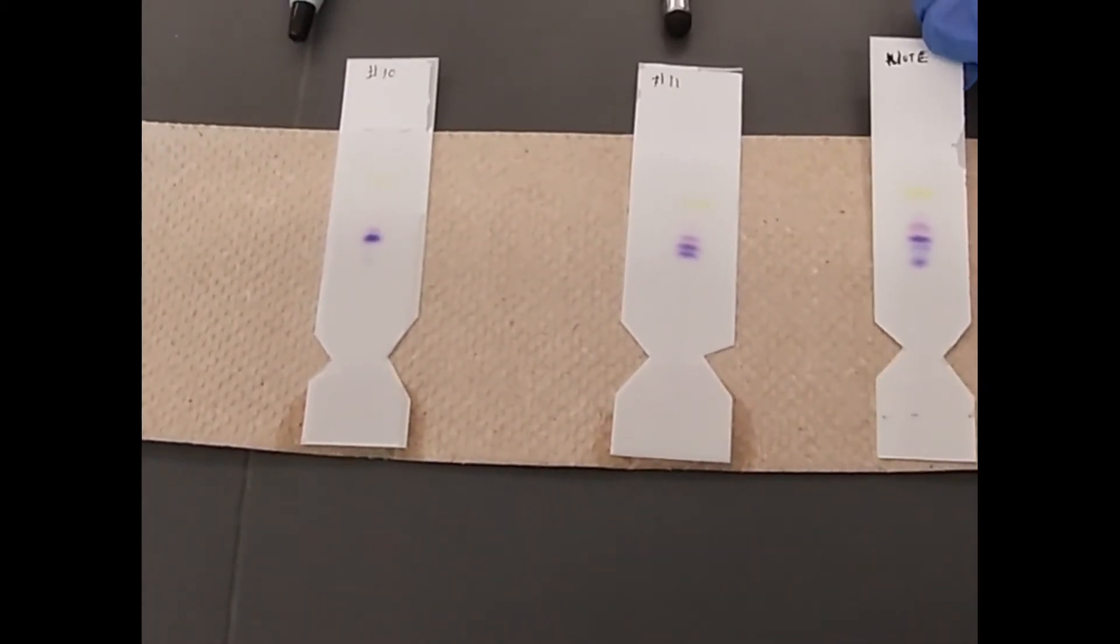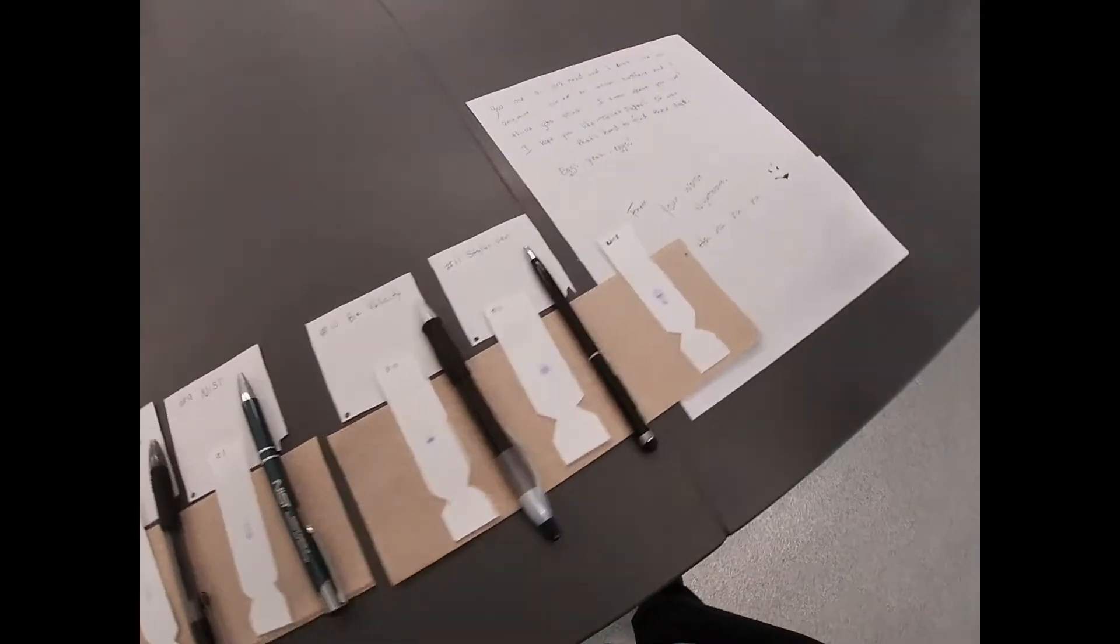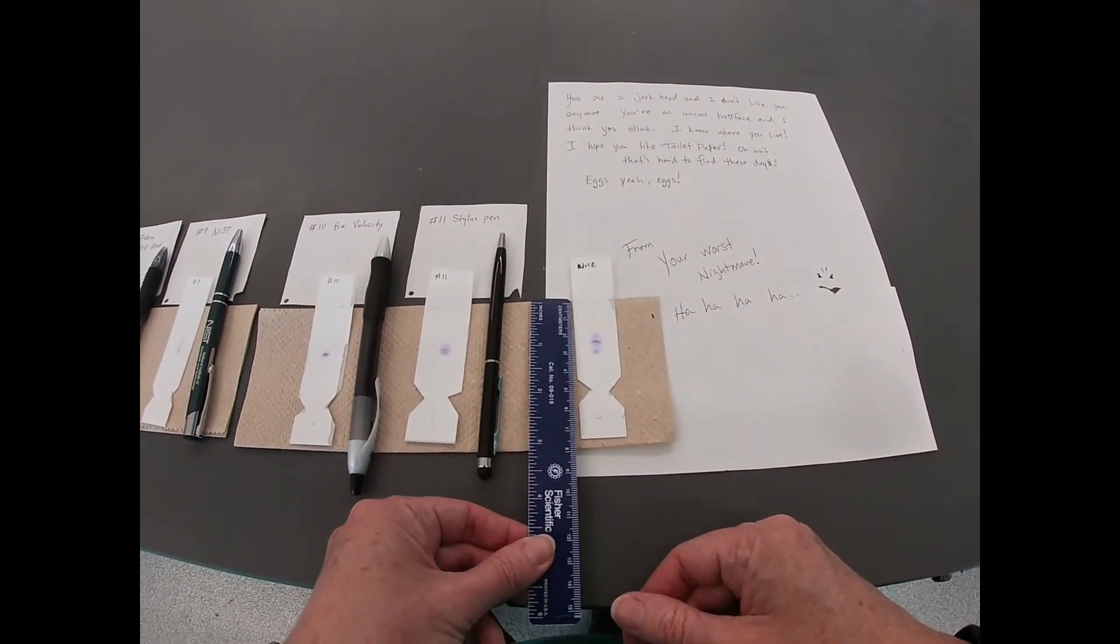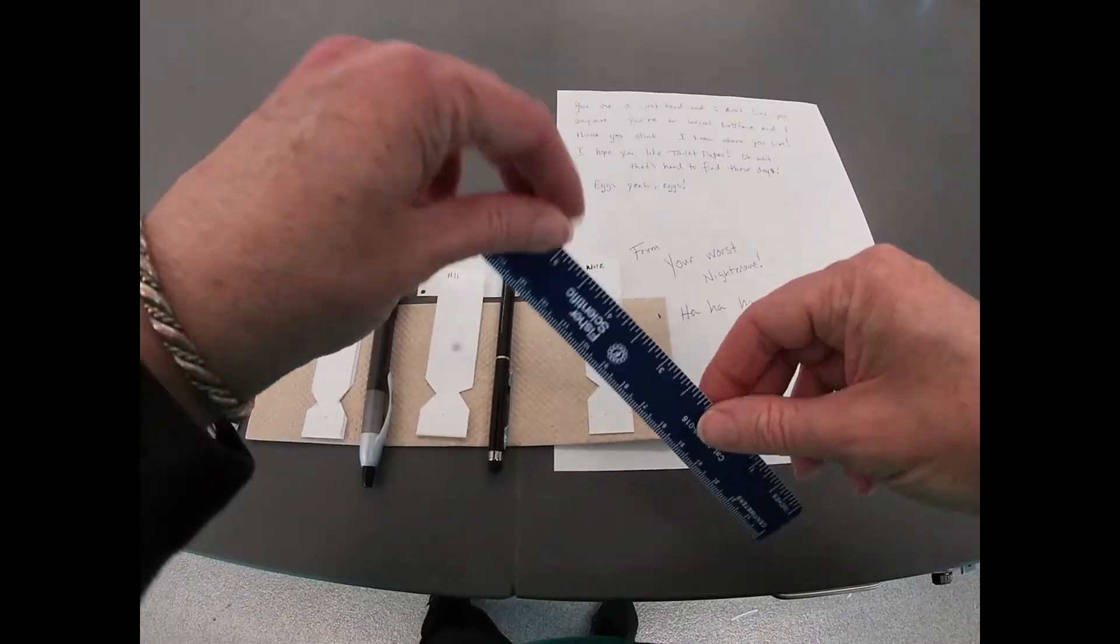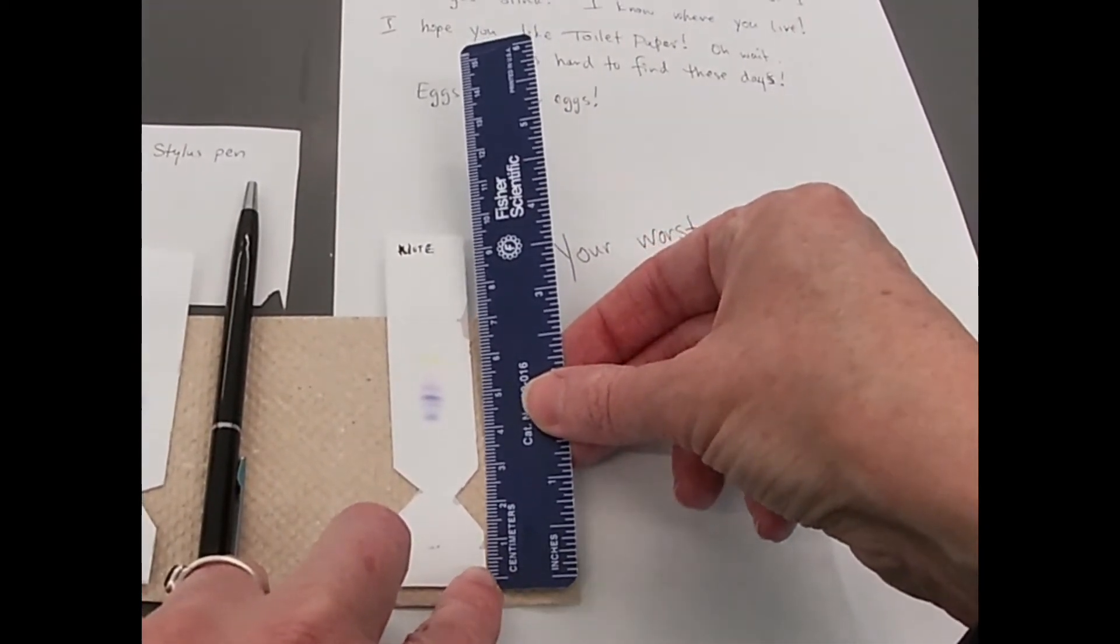Again, things might become even more clear once everything's dry. All right, so when we calculate our retention factor, basically what we're going to do is figure out how far each of the bands here moved relative to the solvent front.